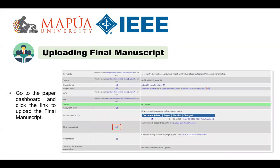Once registered to the conference, go to the paper dashboard and notice that the link to upload the final manuscript is enabled. Click it to initiate the upload, read and follow the guidelines for uploading the final manuscript. Please ensure that your final manuscript has passed the IEEE PDF Express checking.